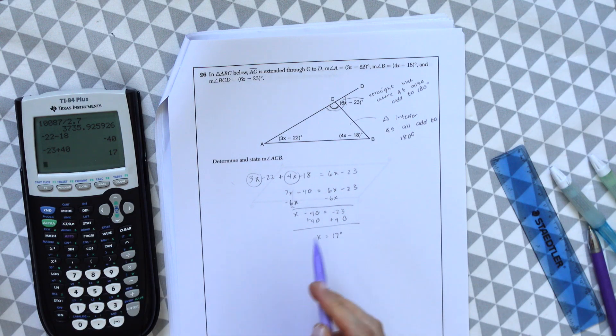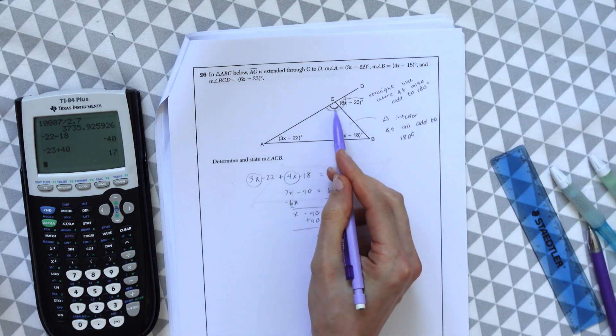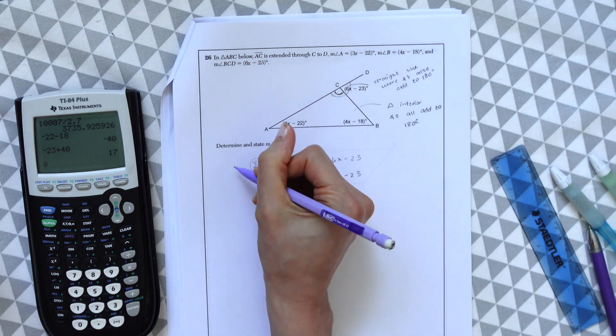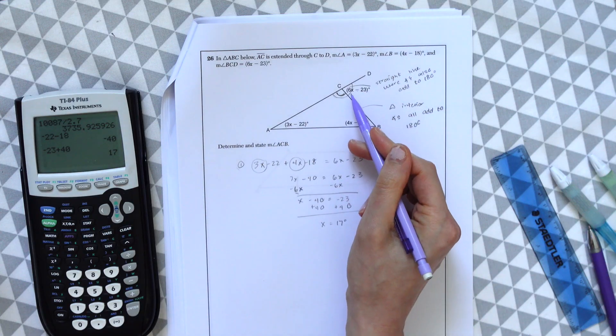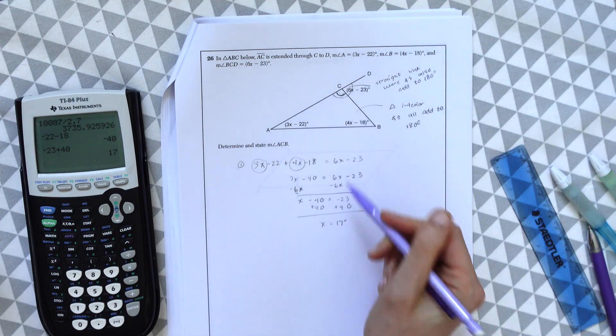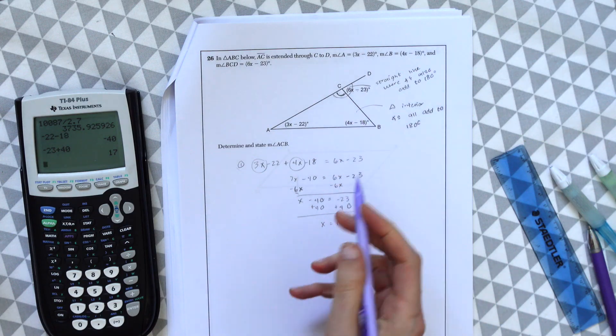But before we just circle our answer, remember, we're trying to find this missing angle C. So we just did the first part of this question, we're finding the value of x. But now let's plug in the value of x to find this missing angle.